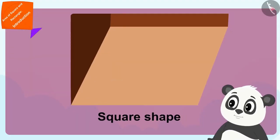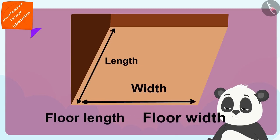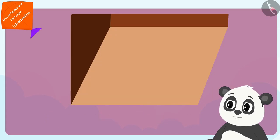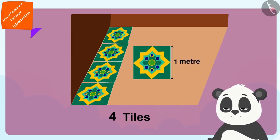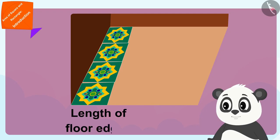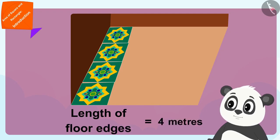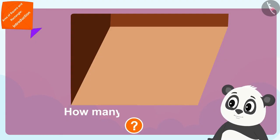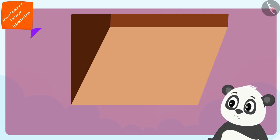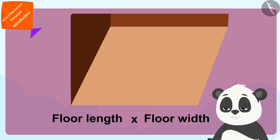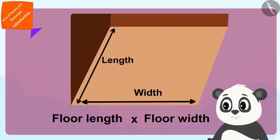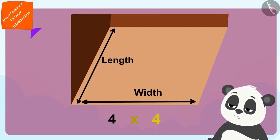Now let's see what Golu is doing. Golu's floor is square-shaped, so the length and width of his floor are exactly equal. He has laid four one-meter long tiles along the edge of his floor, meaning the edge of his square-shaped floor is four meters long. To find the number of tiles required to cover Golu's floor, he only has to multiply the length of any two edges.